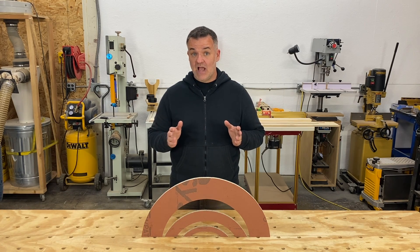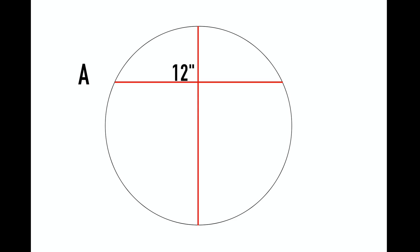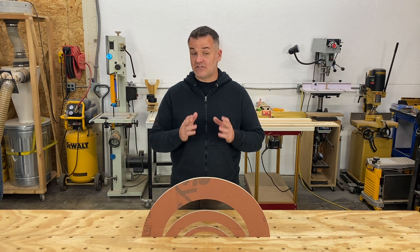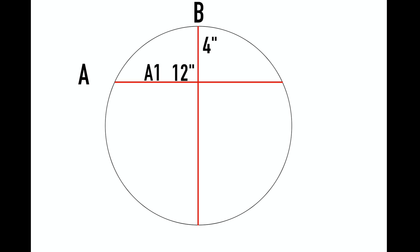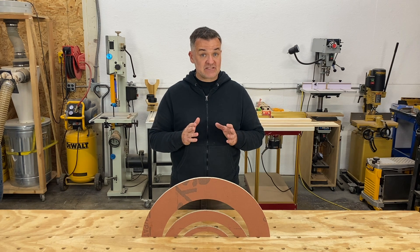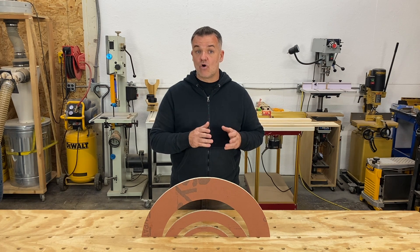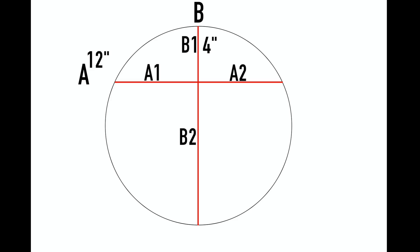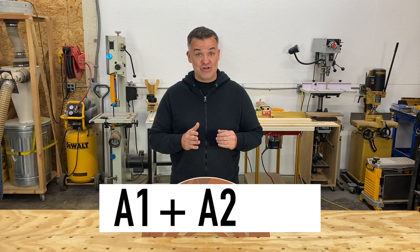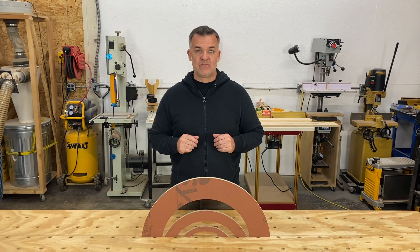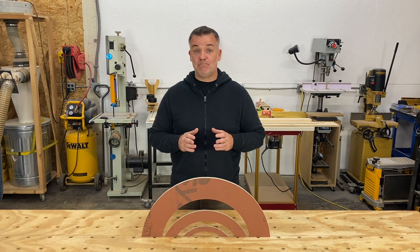Here's an example. Let's say we need an arch that is 12 inches wide — we call that line A — and we want the arch to rise four inches — we call that line B. Because the lines split at the intersection, we label them a1, a2, b1, and b2. Notice that line B is in the center of the arch, making it the diameter. So a1 must be half of line A — six inches — and a2 must also be six inches.